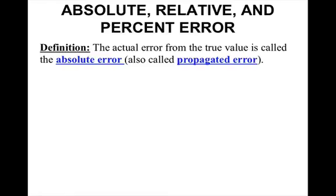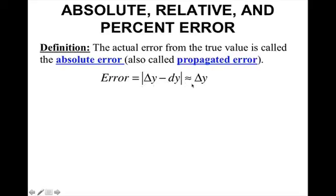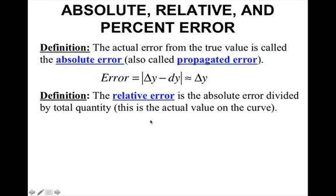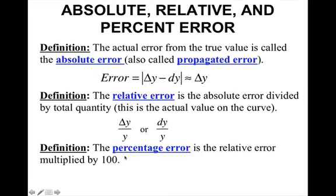So absolute, relative, and percent error. The actual error from the true value is called the absolute error — also called the propagated error — and this is given by the absolute value of delta y minus dy, which we are saying is approximately delta y. The relative error is the absolute error divided by the total quantity — that is, delta y over y or dy over y. The percentage error is the relative error multiplied by 100.